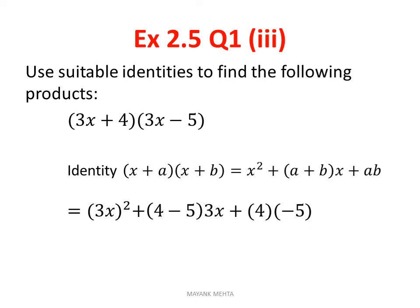The first term here 3x square. Make sure you don't forget the sign. Here 5 is minus so the minus sign will always stay with 5. So, 4 minus 5 into 3x plus 4 into minus 5. 3x square becomes 9x square. 4 minus 5 that is minus 1 into 3x that is minus 3x and last term is minus 20.